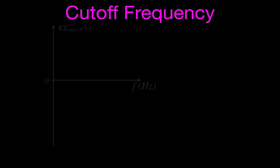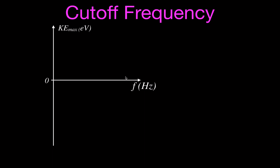Now we have this graph. On the graph, we have the x-axis showing the frequency of the incoming light that you're shining on the metal plate to release those electrons — measured in hertz, increasing across the x-axis. On the y-axis, we have the maximum kinetic energy measured in electron volts — the kinetic energy of the photoelectrons that come off our metal plate when we have enough energy to overcome the work function.